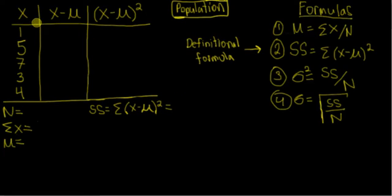So let's get started. Here you can see we have five scores. The first thing you're always going to want to do is to tally up the number of scores in your population. Since we have five, I'm going to write five right here next to our big N. And our big N is the number of scores in our population.